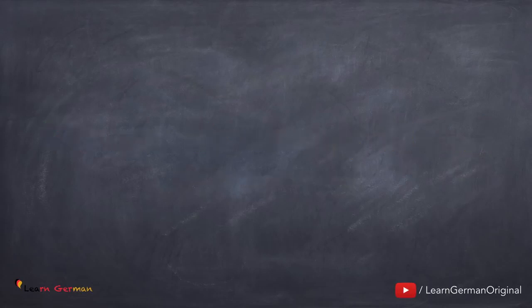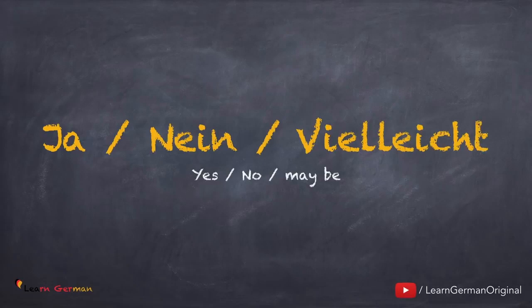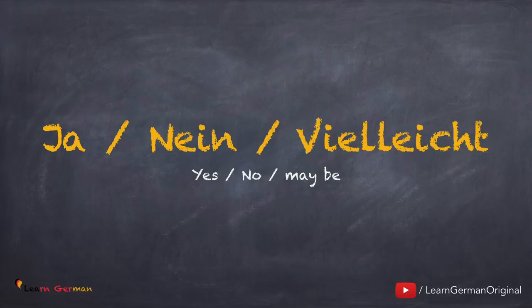Now, coming to the three most important words in a language: Ja. Nein. Vielleicht. Please notice the J has the sound of 'ye', Nein sounds like the English number 'nine', and Vielleicht — again, the V has the sound of F.